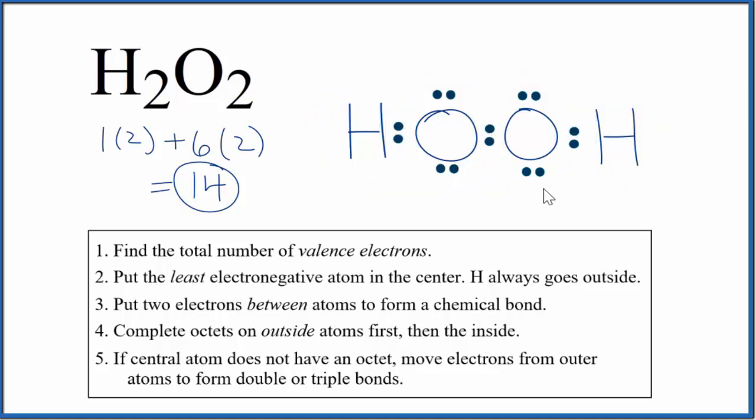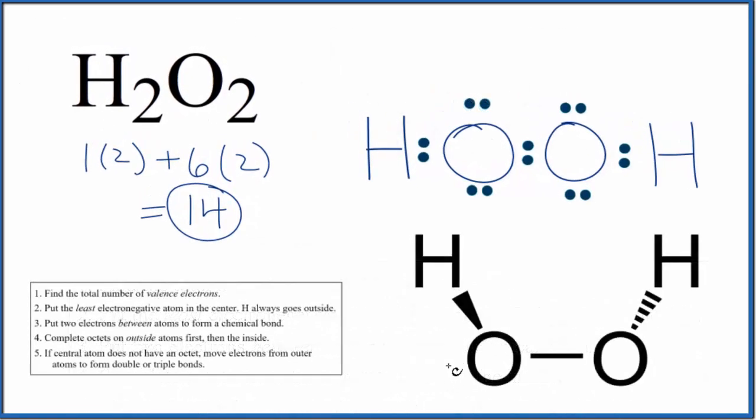So this is the Lewis structure for H2O2, hydrogen peroxide. If we wanted to look at the molecular geometry, that would look like this. And we would have our electron pairs out here, like this. If you need help with the molecular geometry for hydrogen peroxide, there's a link at the end of this video.